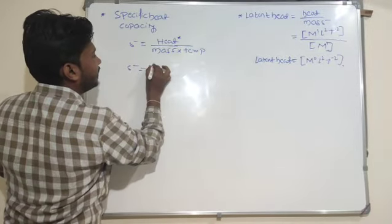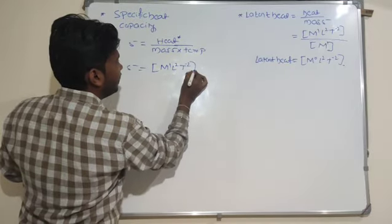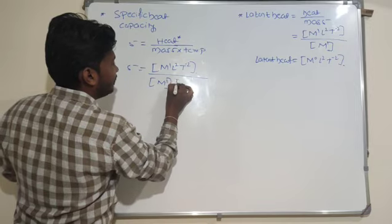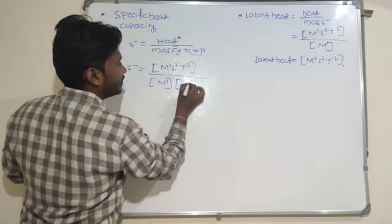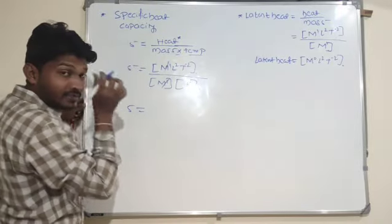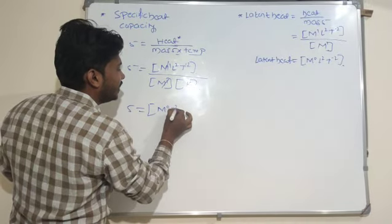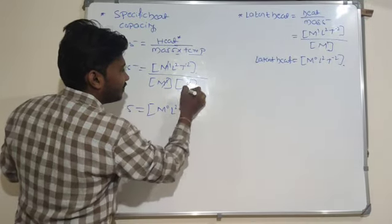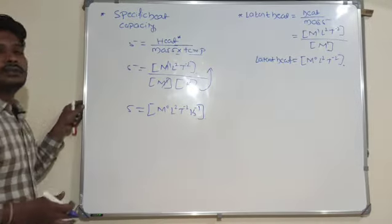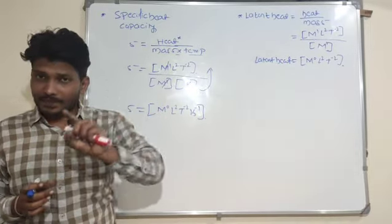The dimensional formula for specific heat: heat is M1 L square T to the power of minus 2. Mass term is M1. Temperature term is written as K. The mass terms cancel to give M0. So we get L square T to the power of minus 2, and since K is in the denominator it goes to numerator as K to the power of minus 1. This is the way to write the dimensional formula if there exists any temperature term.